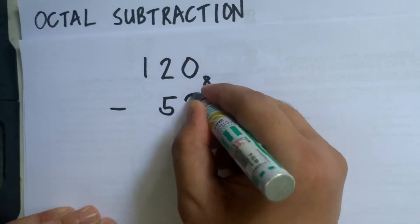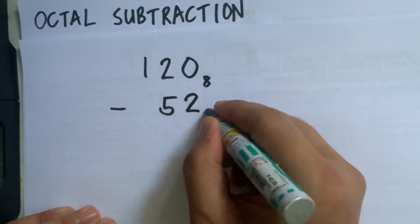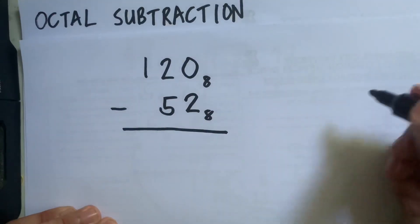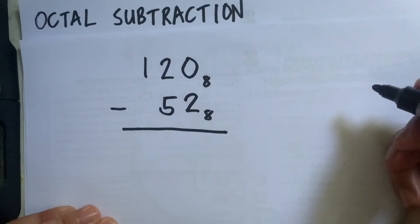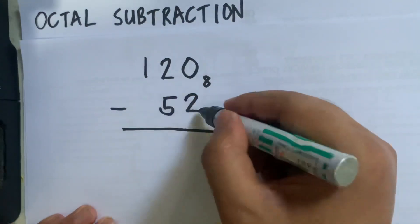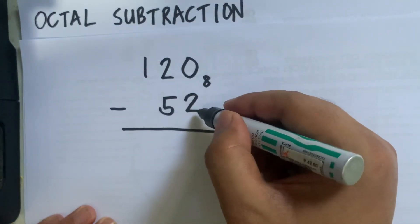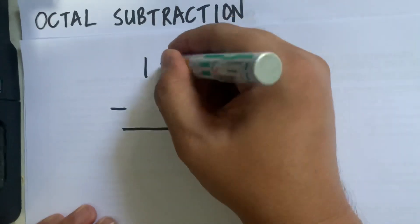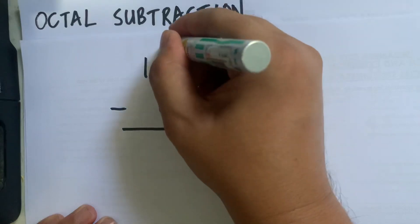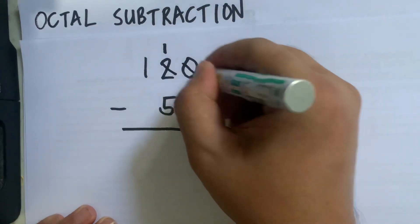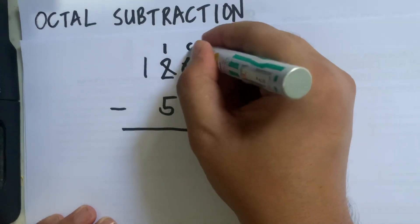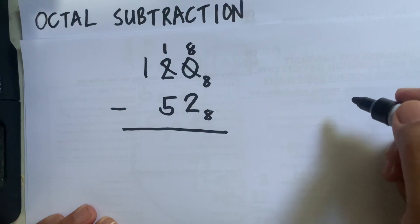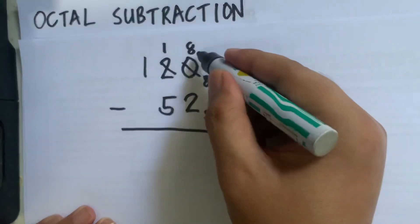Let's have another example: 120 in octal minus 52. We start with 0 minus 2 — cannot be done, so 0 will borrow 1 from 2, making 2 become 1, and 0 here becomes 8.